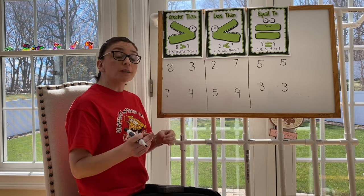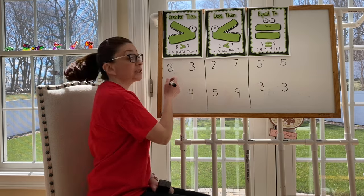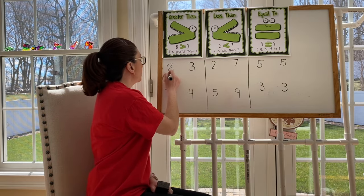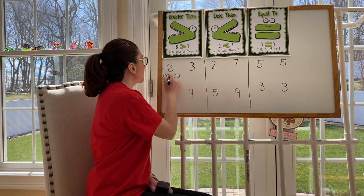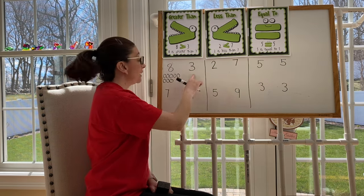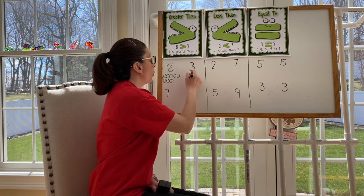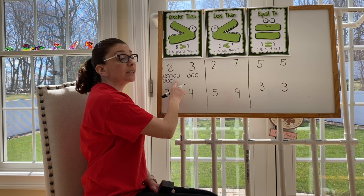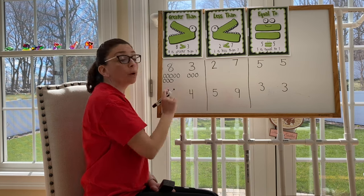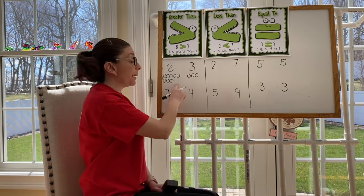Let's start with eight. One, two, three, four, five, six, seven, eight. Now let's look at three. One, two, three. Which number is greater or has more? The number eight.